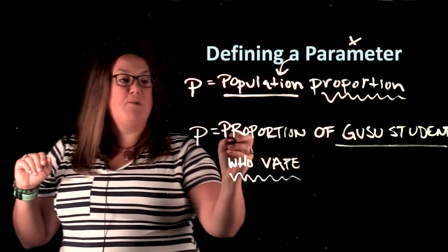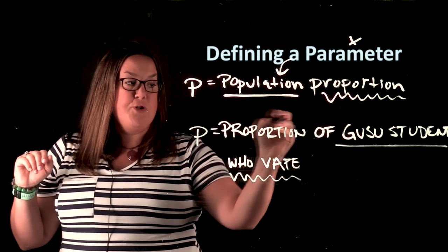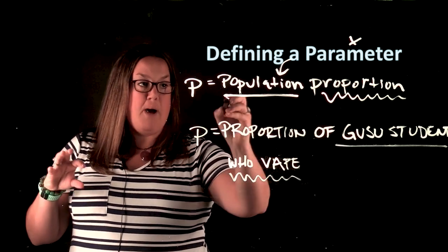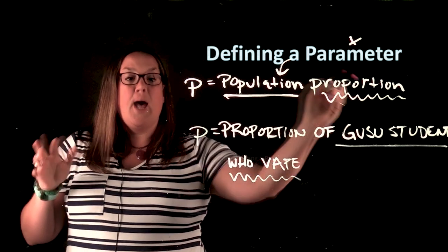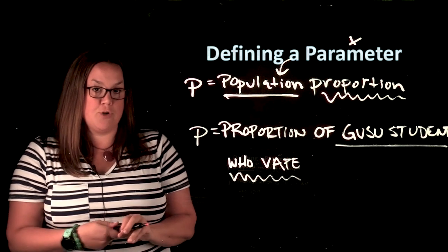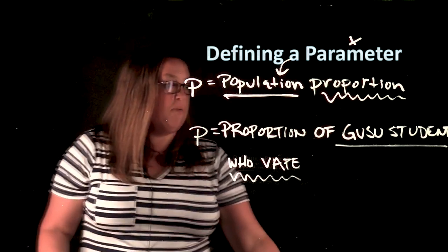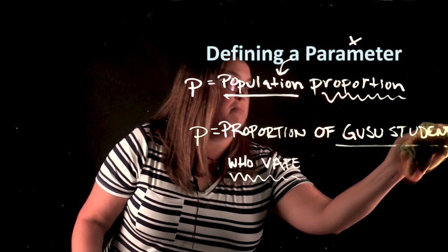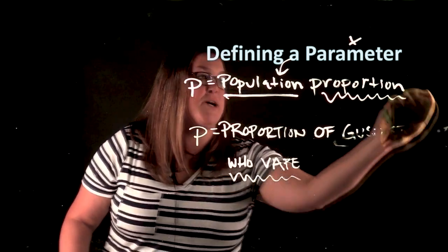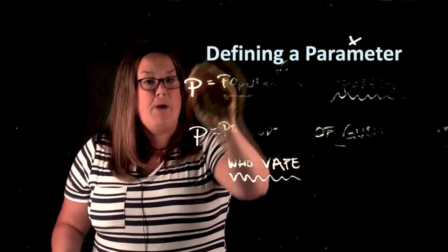So you're always going to have first: proportion, percent, or probability. Then you have the population. And then you would say what it is you're measuring. So for a parameter, you always have to say that population, and you won't have a number because we're not going to know the entire population.